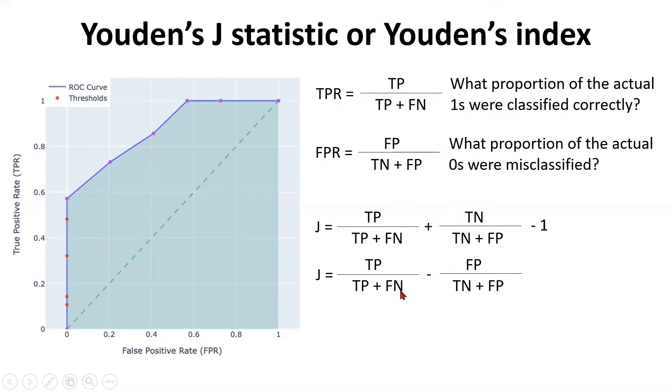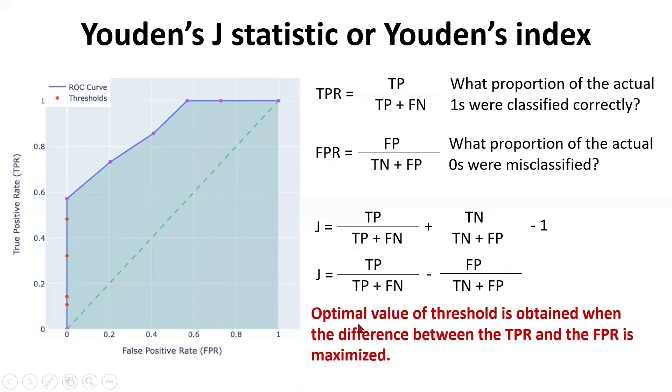Once again, what is TPR? TPR is the model's ability to identify the ones correctly. And FPR is an error which talks about what proportion of the class zero were misclassified. Once you get the best of both worlds, if your true positive rate is the highest and the false positive rate is the lowest, that's exactly the optimal point. So we are looking for that point on the ROC curve, that threshold on the ROC curve at which the difference between TPR and FPR is maximized.